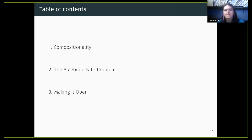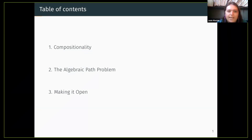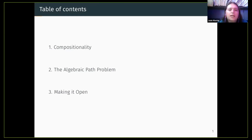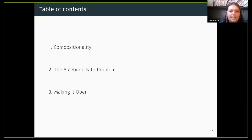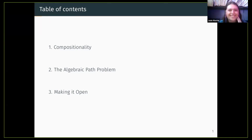There are going to be three parts to this talk. First, I'm going to talk about the general strategy of compositionality in this context that various people like John Baez, Kenny Courser, and Brendan Fong have been working on. Then I'm going to talk about the algebraic path problem in particular. And last, I'm going to combine the first two sections and make the algebraic path problem more open.